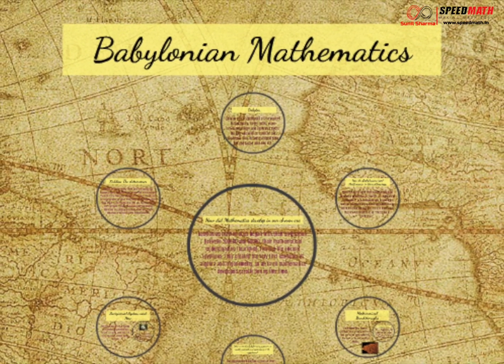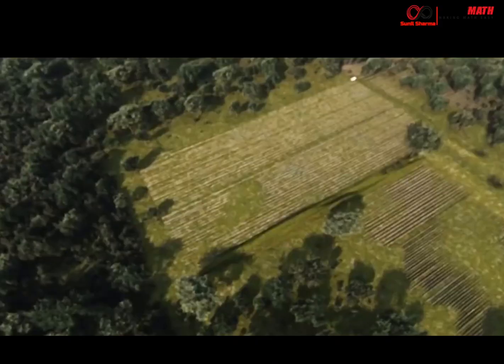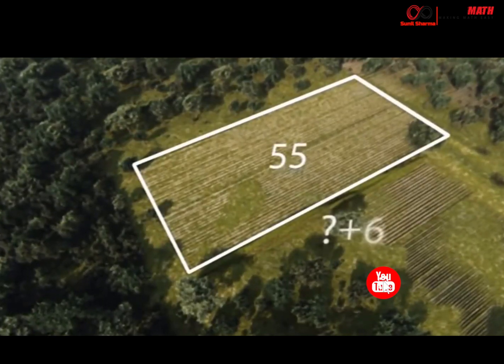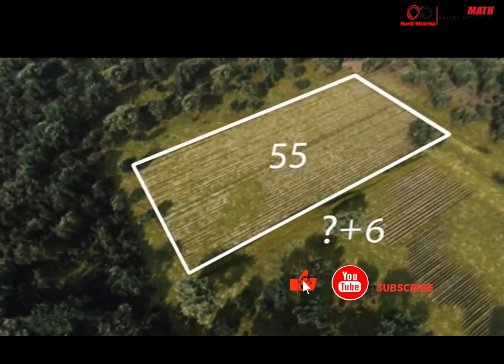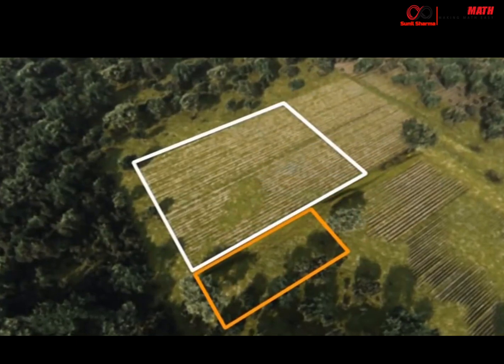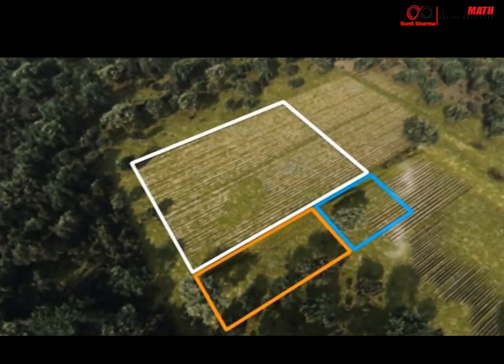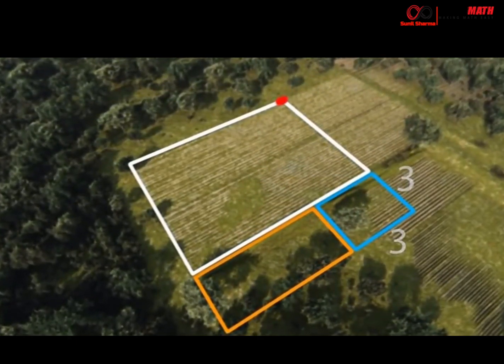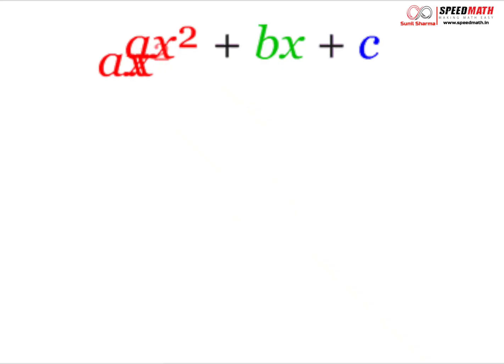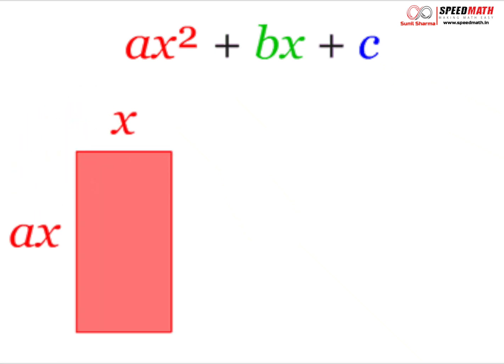The ancient Babylonians were remarkable mathematicians. Among many extraordinary achievements, they found a now famous mathematical solution to an unpleasant challenge: paying tax. Given a tax bill that has to be paid in crops, by how much should I increase the size of my field to pay it? This problem can be written down as a quadratic equation of the form ax² + bx + c = 0 and it is solved with the help of this formula.